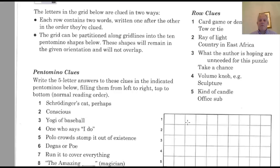The letters in the grid below, here it is, are clued in two ways. Each row contains two words written one after the other in the order they're clued. It doesn't say if they fill the row or not. But here are the row clues, two clues each.